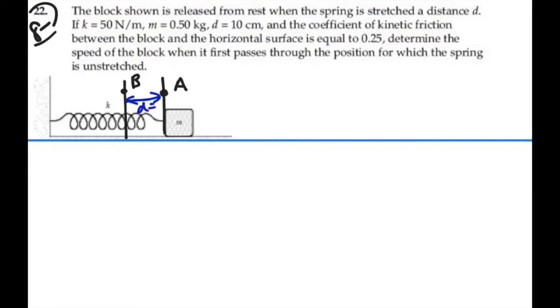d equals 10 centimeters or 0.1 meters. That's also equal to x, which is the distance that the spring is stretched, 0.1 meters. And we want to find the velocity at point B.